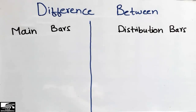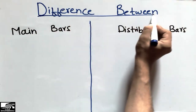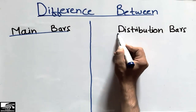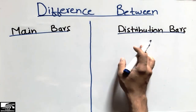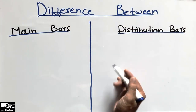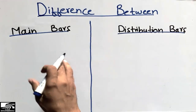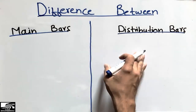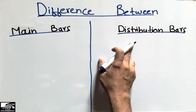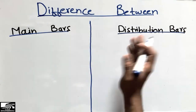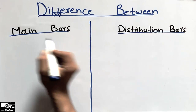Hello guys, welcome back to the Civil Engineering YouTube channel. Subscribe to our channel for daily civil engineering videos. Today our lecture is about the difference between the main bars and the distribution bars. This is a really important topic related to every civil engineering student, so here I will discuss the main differences between these two types of bars, which are mostly used in slabs and footings.